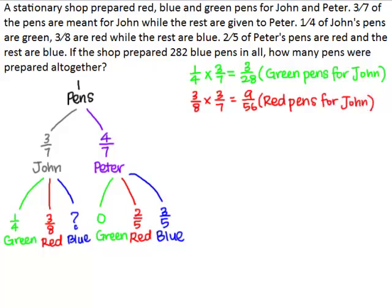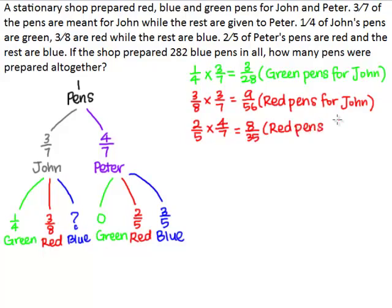Now we will find the fraction of all the pens that are Peter's red pens. Two-fifths of Peter's pens are red, and four-sevenths of all the pens belong to Peter. So two-fifths multiplied by four-sevenths gives us eight over thirty-five. And so eight over thirty-five of all the pens are Peter's red pens.